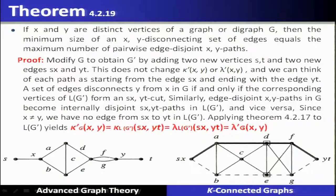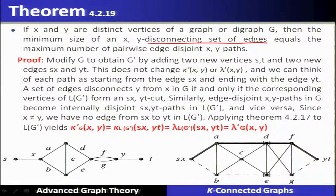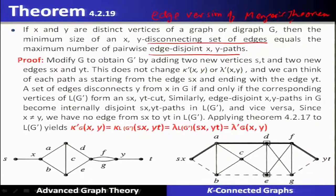If x and y are distinct vertices of graph G, then the minimum size of an x-y disconnecting set of edges equals the maximum number of pairwise edge-disjoint x-y paths. This is the edge version of Menger's theorem, where we consider a disconnecting set of edges rather than a separating set of vertices.